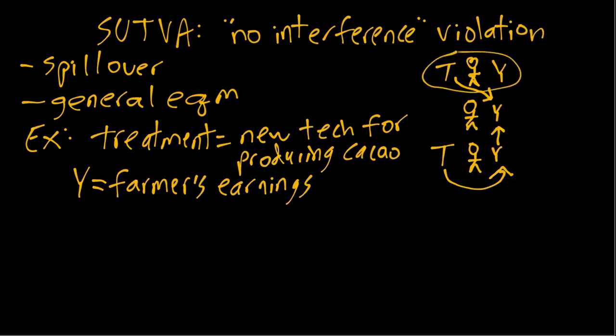If we imagine just giving the treatment to one individual farmer and nobody else in the world, what would happen is, assuming this technology works and increases productivity, that farmer would be able to produce more quantity of cacao given the same labor and other inputs because they have increased productivity. And then they would be able to sell that for more total earnings because the price would be the same as before and they would have a higher quantity that they're selling. So for the individual farmer, the effect on Y would be positive and would be just this increased productivity times the current price.